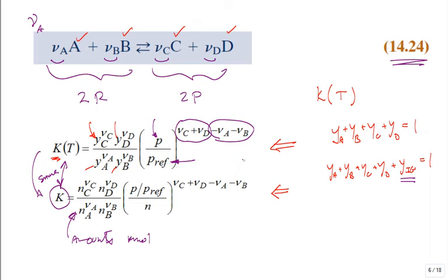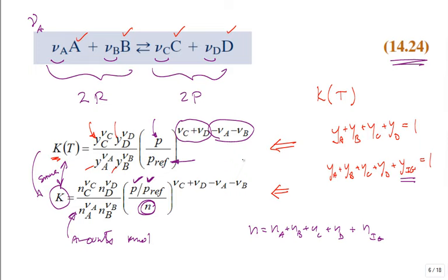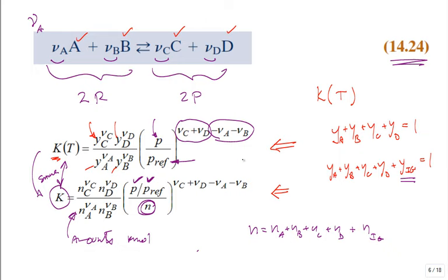The P over P_ref is the same P divided by the same P_ref. What's different is the total number N — that's the number of moles of A plus moles of B plus moles of C plus moles of D plus, if you have it, the number of moles of inert gas. If you do have inert gas, you must include it in the sum N because it affects the mole fractions. You can work in either mole fractions (Ys) or amounts (Ns) — it doesn't matter; it's your preference.